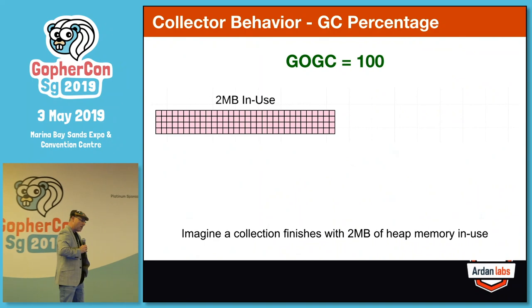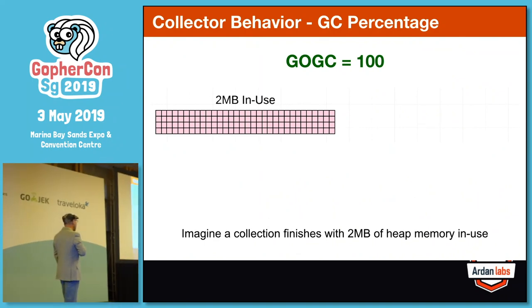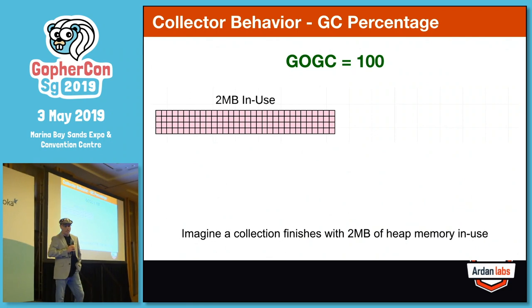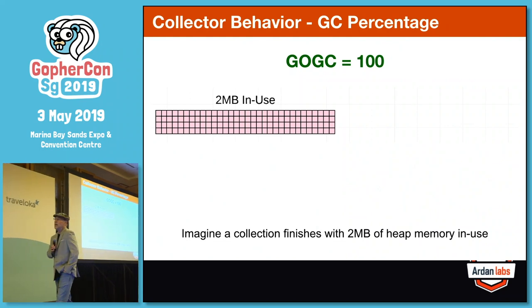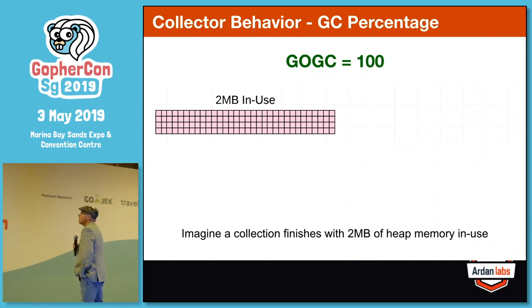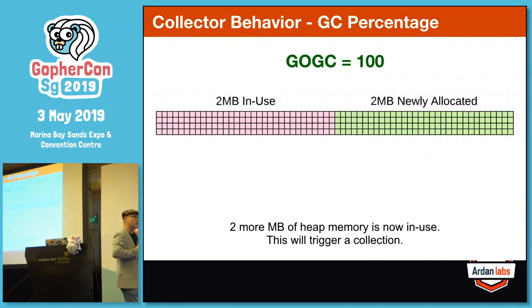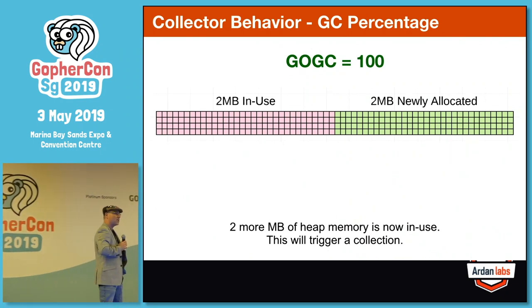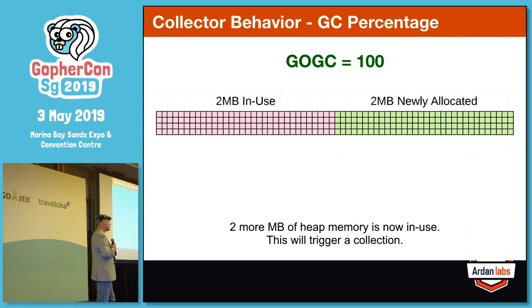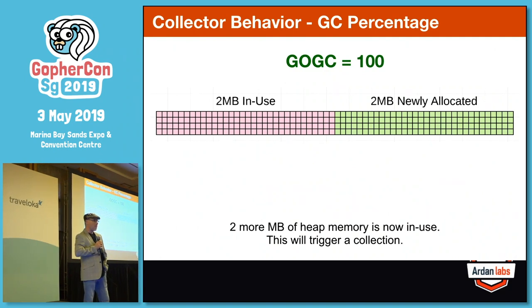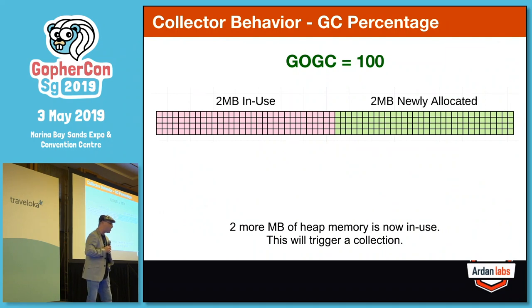Imagine after a collection we're left with two megs of memory currently in use on the heap. With GOGC set to 100, that means the next collection doesn't really have to start until there's another two meg of new allocations made. If you end up with four megs of memory in use, then the 100% means we'll allow another four meg of allocations to occur before we have to start another collection. A heap isn't this clean, but we're able to track allocations.